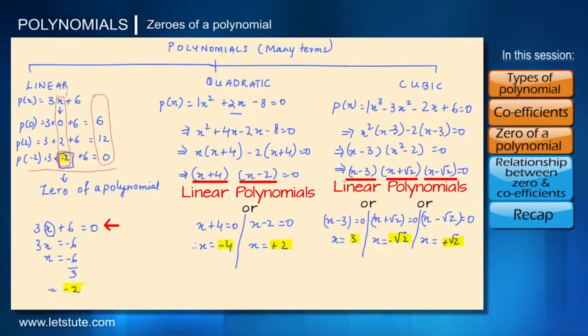When we have degree 2 for quadratic polynomial we can have up to two zeros of a polynomial. And when the degree is three we can have up to three zeros of a polynomial.